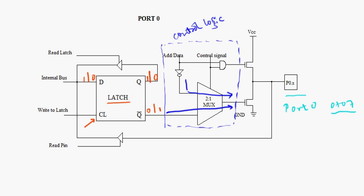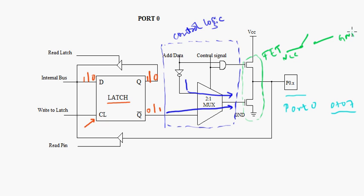Then we have got FETs. These two are called field effect transistors. They act exactly like a switch. Whenever a high input is given then it acts as a closed switch and it allows the data to pass through. If a low signal is given then it acts as an open circuit, which means it doesn't allow anything to pass through.